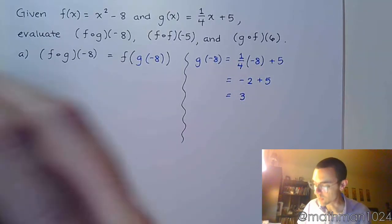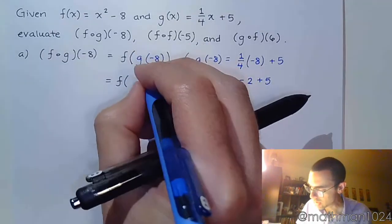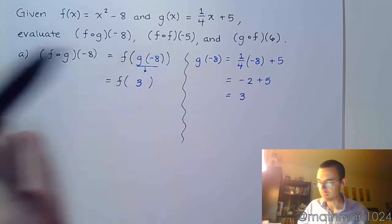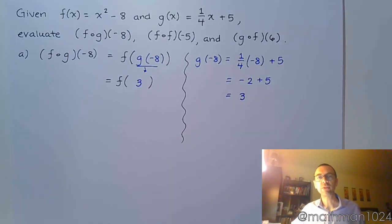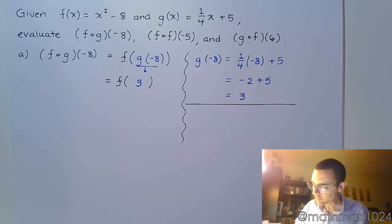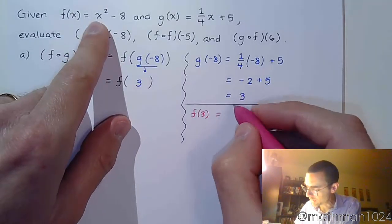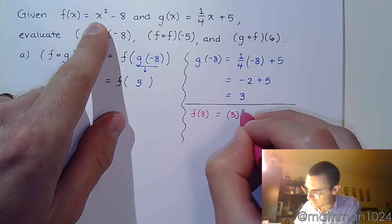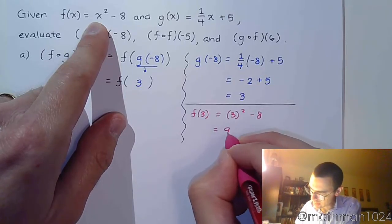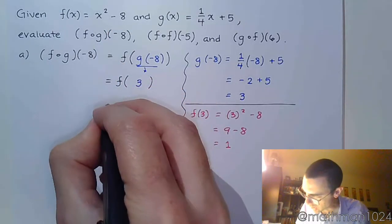And now that we know that's 3, we come back over here and we plug it in for f. All right, so g of negative 8 becomes 3. So f is never going to be evaluated for negative 8 in this example. Negative 8 goes into g, and now that value of 3 goes into f. So off to the side, we do f of 3. So plug that in. That's 3 squared minus 8. And so 9 minus 8 equals positive 1. And then we're done.